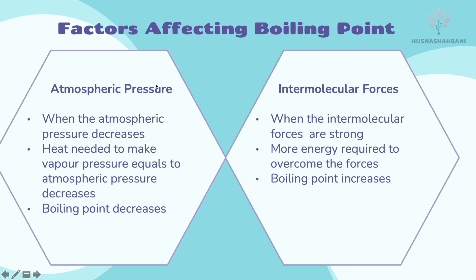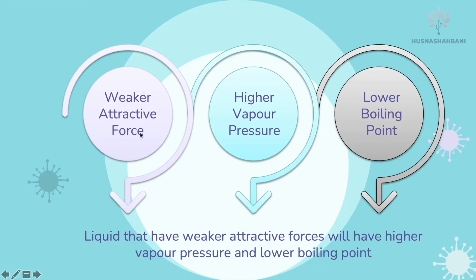Factors affecting boiling point: atmospheric pressure and intermolecular forces. When atmospheric pressure decreases, less heat is needed to make vapor pressure equal to atmospheric pressure, so boiling point decreases. When intermolecular forces are strong, more energy is required to overcome them, so boiling point increases. In summary, weaker intermolecular forces lead to higher vapor pressure and lower boiling point.